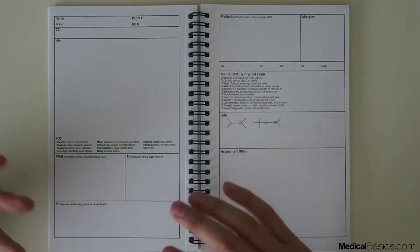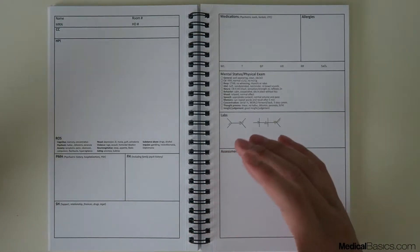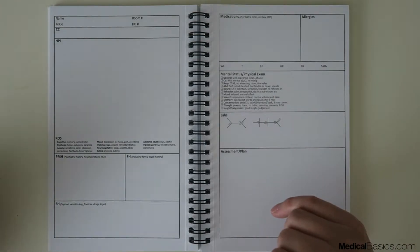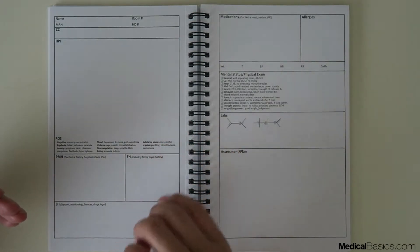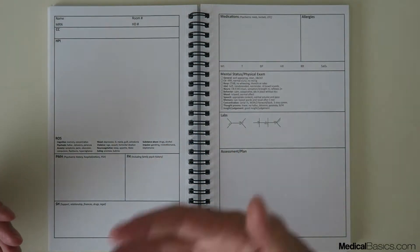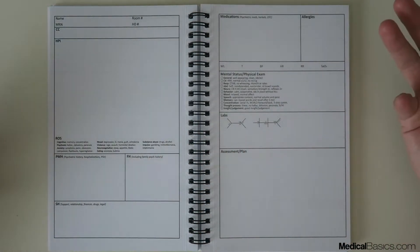One, we're going to have much more room for your social history than we do in others because obviously social history is important. It's also going to have different things for your review of systems, things that are more catered towards the psychiatry setting that are systematic questions you're going to be wanting to ask.